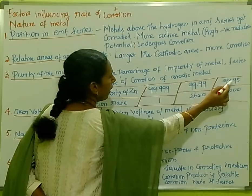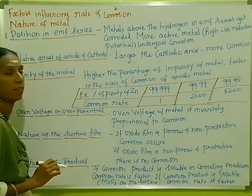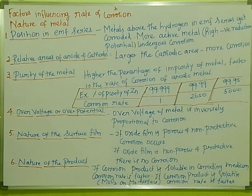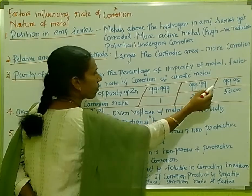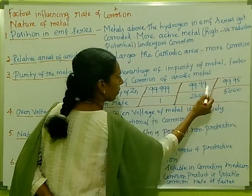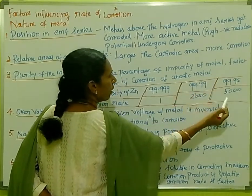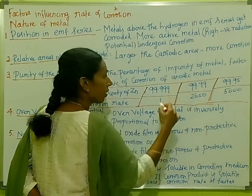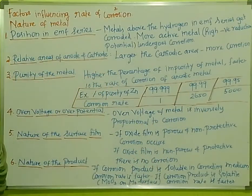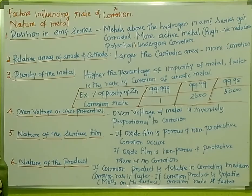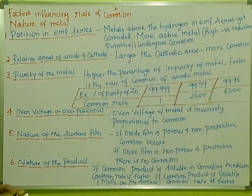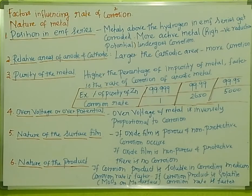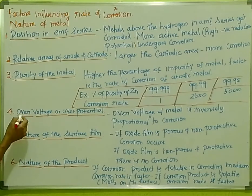If zinc purity drops further to 99.95 or lower, the corrosion rate can reach up to 5000. This shows that even a small increase in impurities causes a very significant increase in the rate of corrosion of the metal.